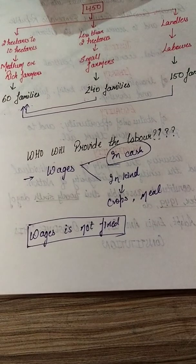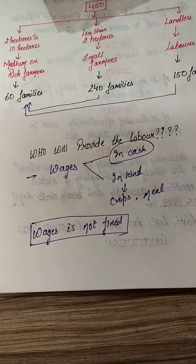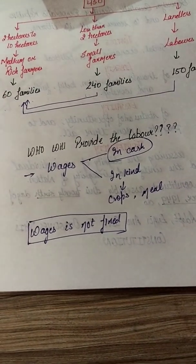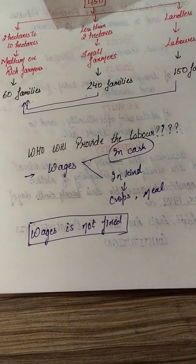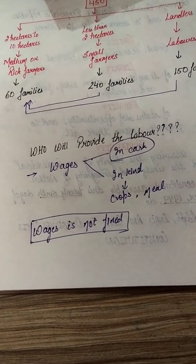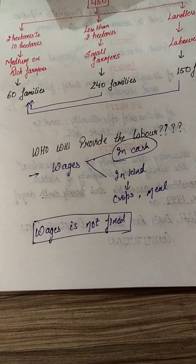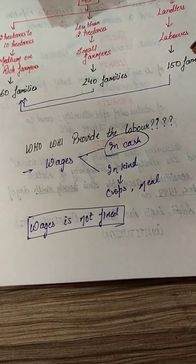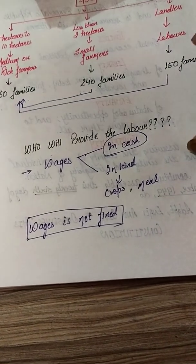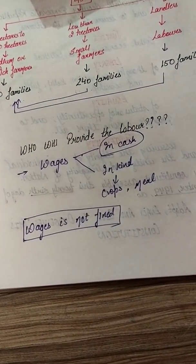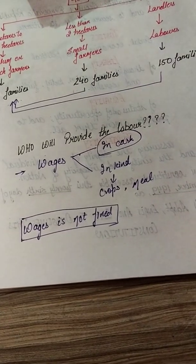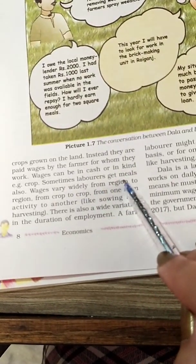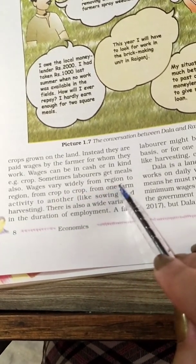There is one problem: wages are not fixed. They vary from person to person and from activity to activity. For example, if it is a sowing season the salary is different, and if it is a harvesting season the salary is different. It also varies from region to region and from crop to crop.